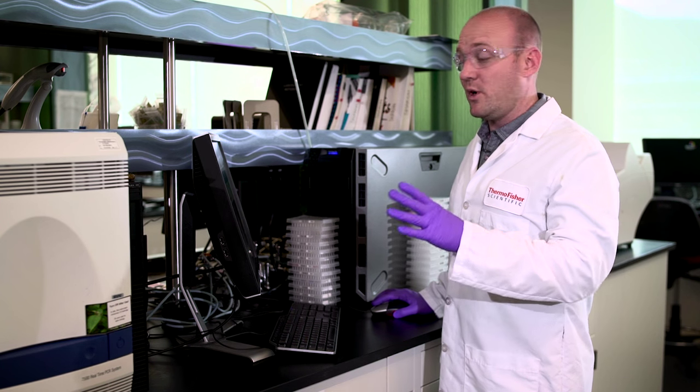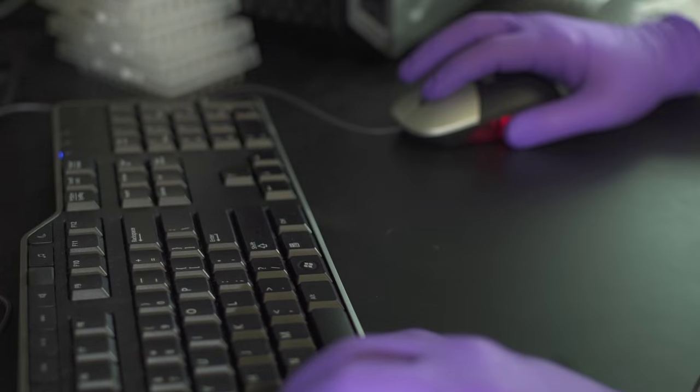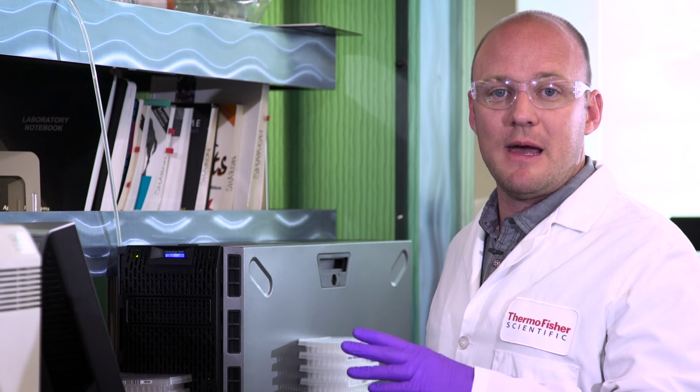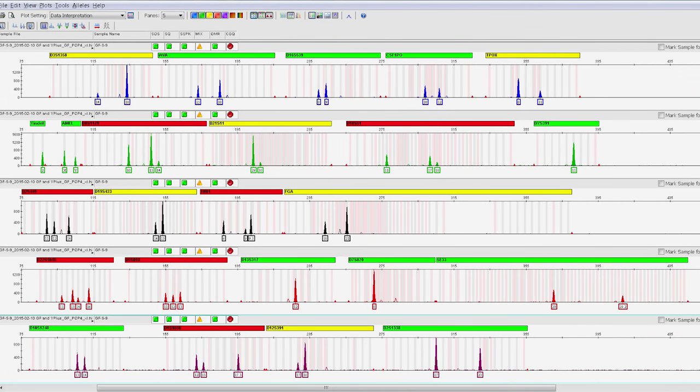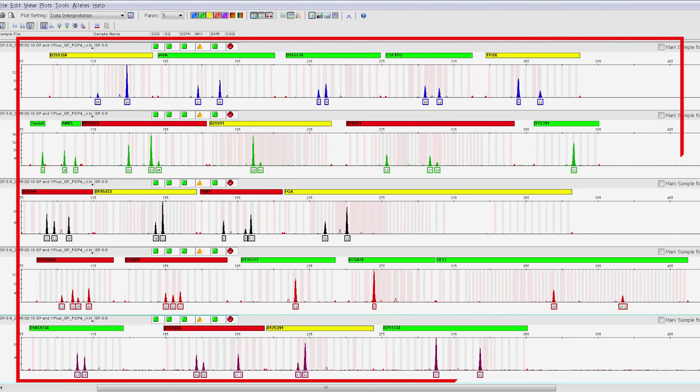This is where the GlobalFiler Kit can really help. Looking at the profile in GeneMapper IDX, with just the initial male concentration of 6 picograms per microliter of DNA, which allowed for an amplification of 90 picograms of DNA, you can see here that we were able to still obtain a strong male profile.